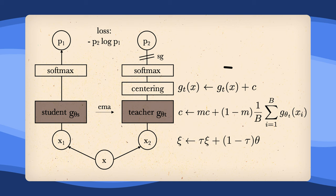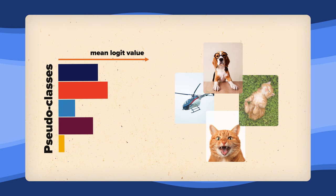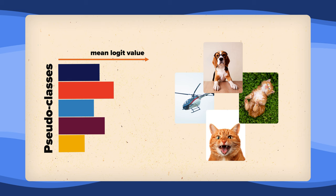Imagine you have a bunch of pictures, and you want to teach the model to recognize different objects in those pictures. Now, if the model always looks at the same object, because it gets its attention the most, like a cute dog, the model will only learn about dogs and nothing else.